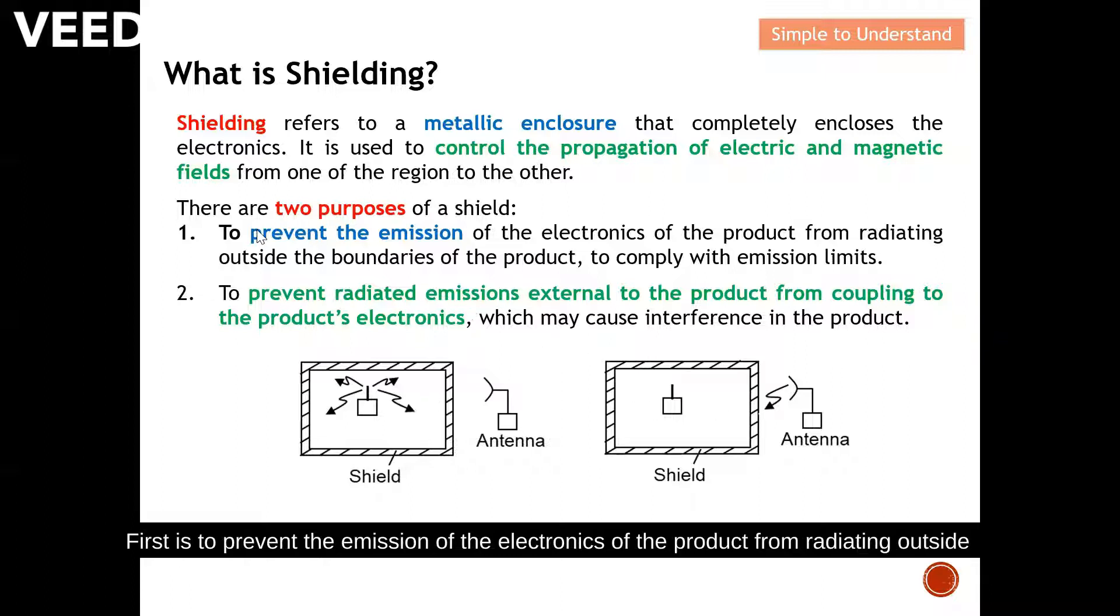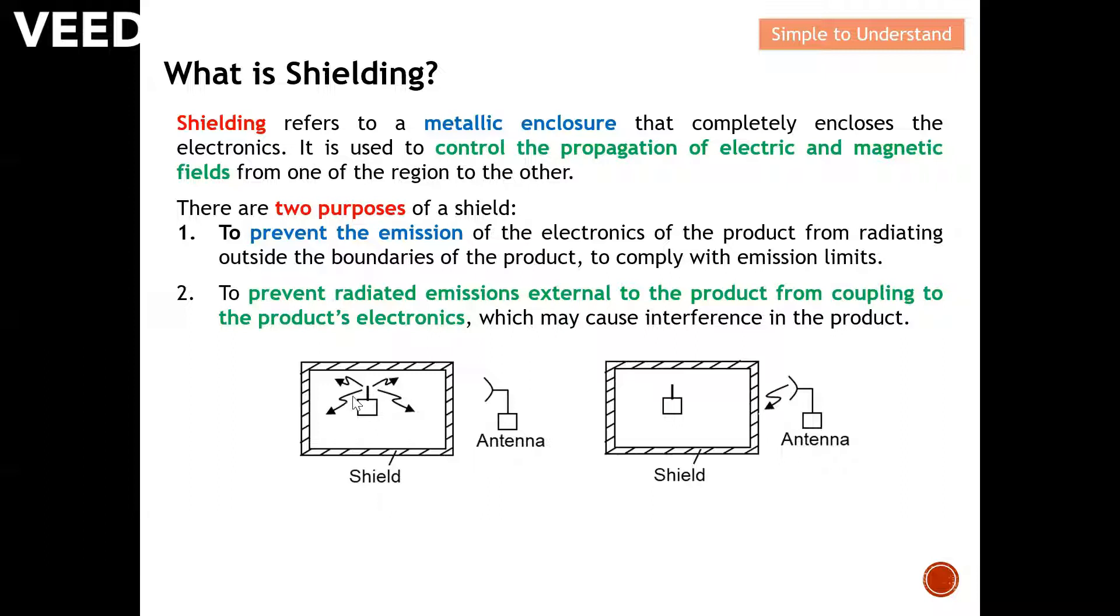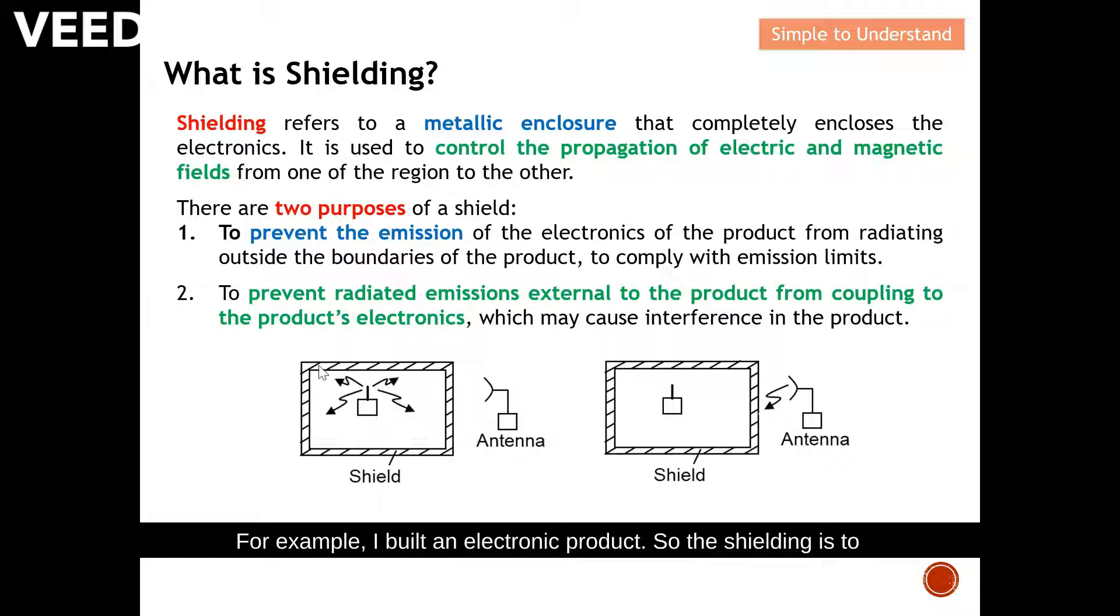There are two purposes of a shield. First is to prevent the emission of the electronics of the product from radiating outside the boundary of the product in order to comply with emission limits. Next, to prevent radiated emissions external to the product from coupling to the product electronics, which may cause interference. For example, a base station may emit electromagnetic waves and disturb your device, so you build a shielding to protect it.